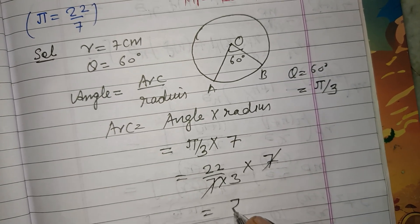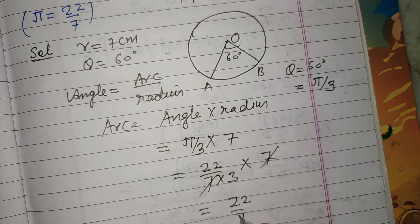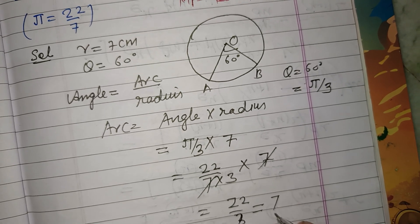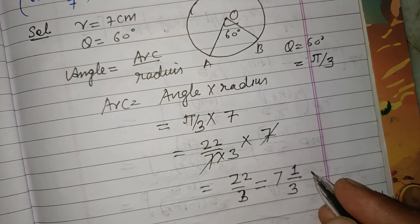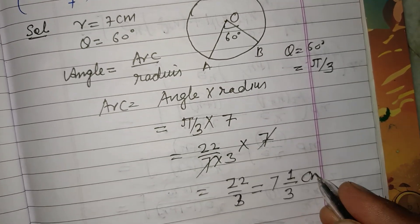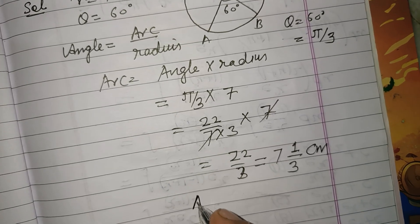7 and 7 cancel, 22 over 3, 3 times 7 is 21, 7 whole 1 by 3 cm is the arc.